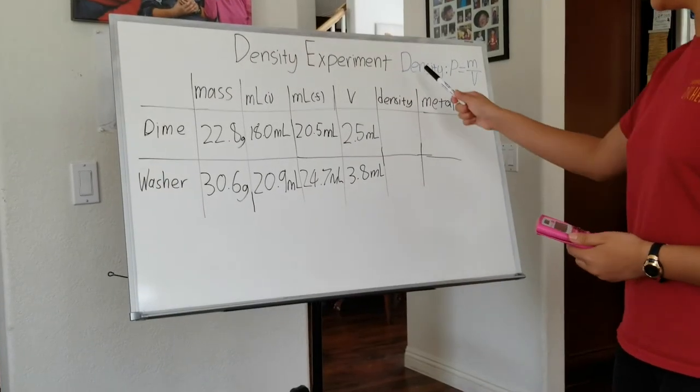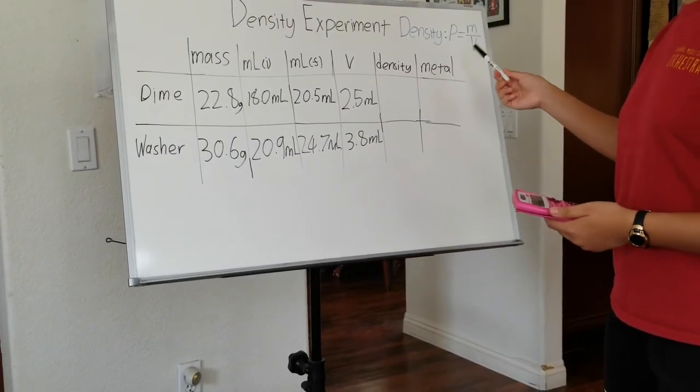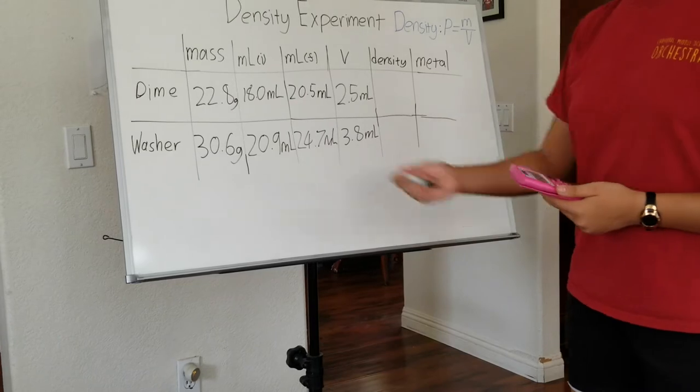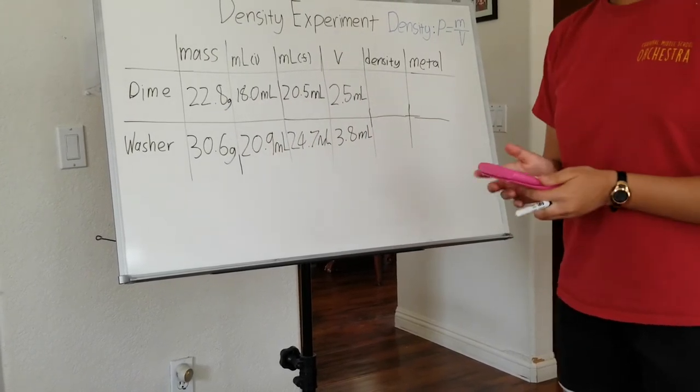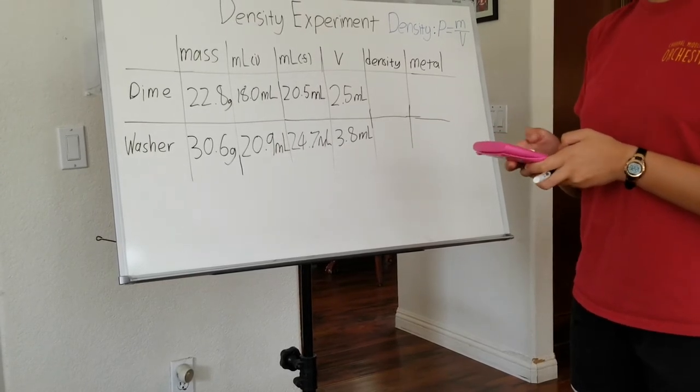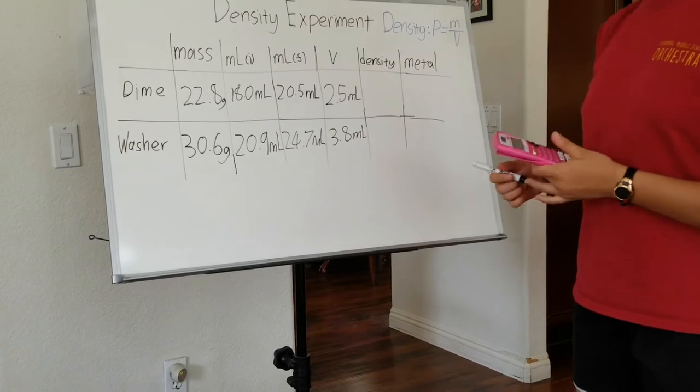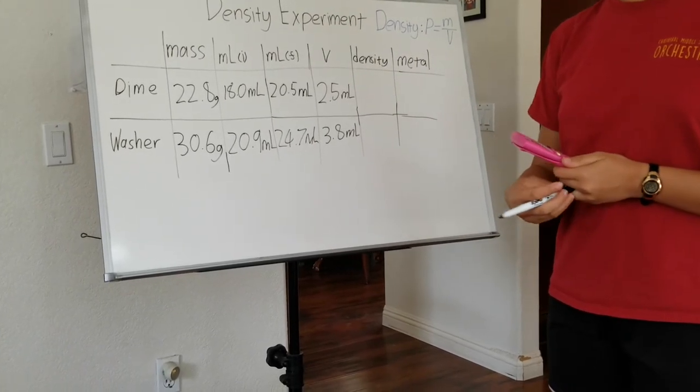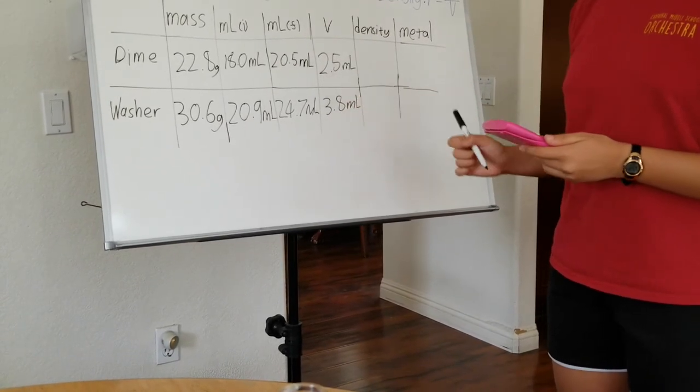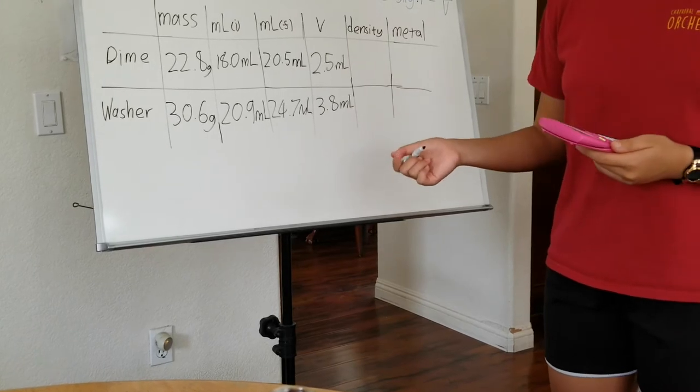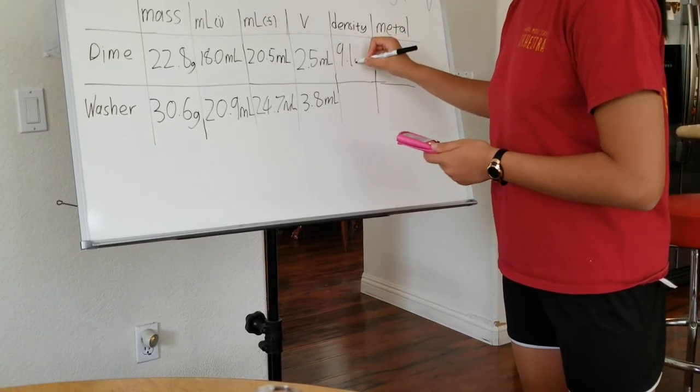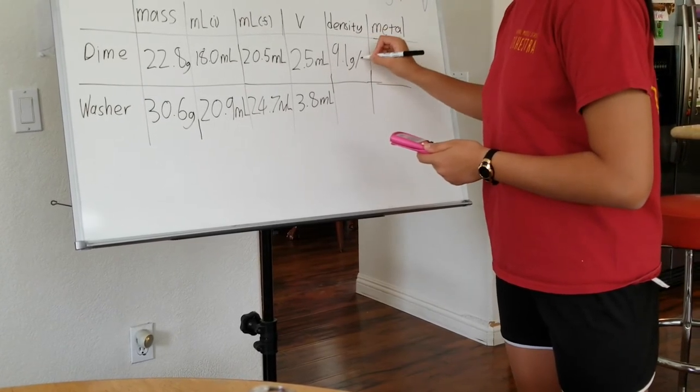So for density, density equals, or rho equals mass divided by volume. So to find the density of the dime, it would be the mass divided by the volume, which is 22.8 divided by 2.5. You would get the answer 9.12. But because you need significant figures, this only has two significant figures, which is the smallest. So you would put 9.1 grams per milliliter.